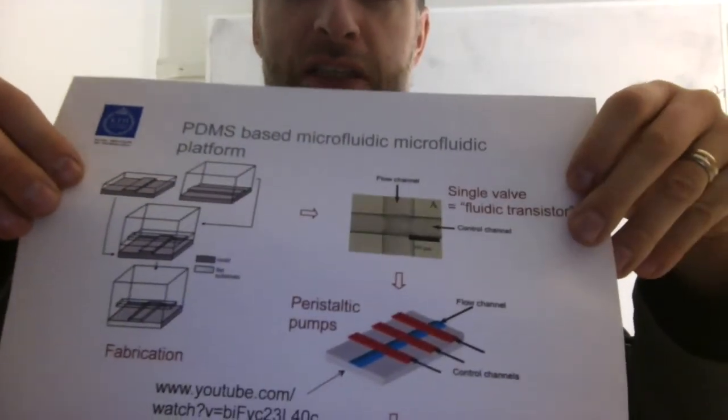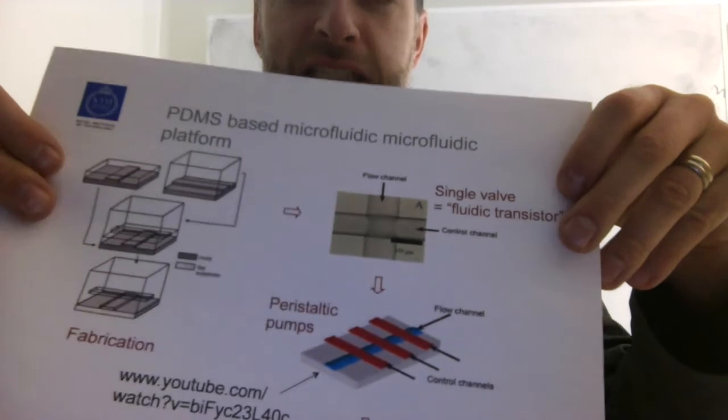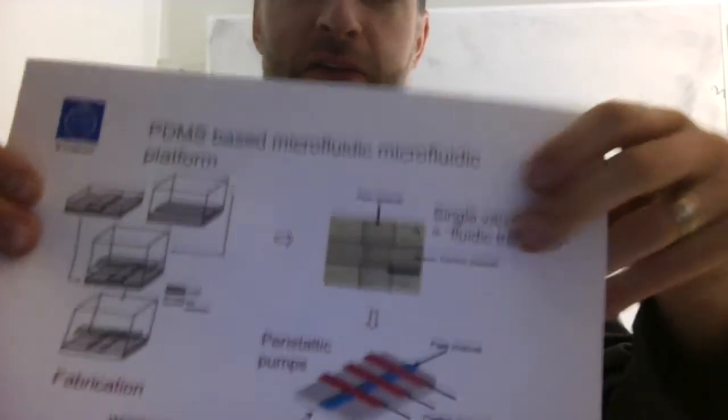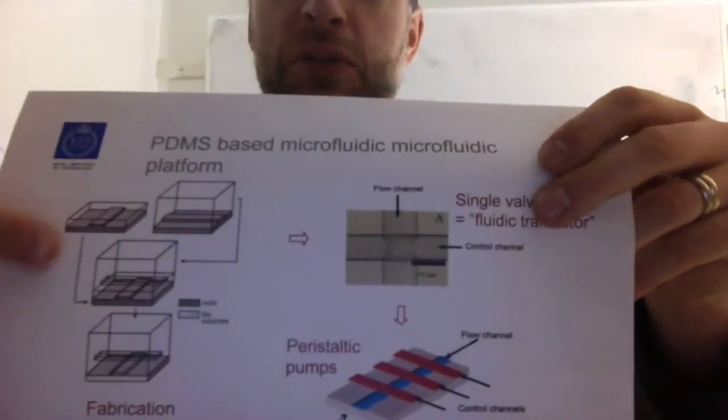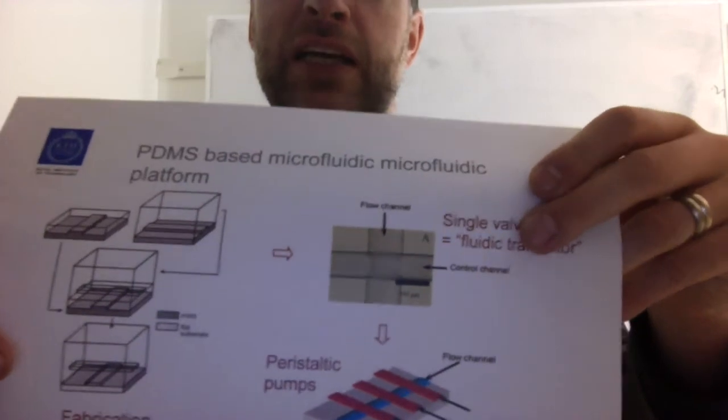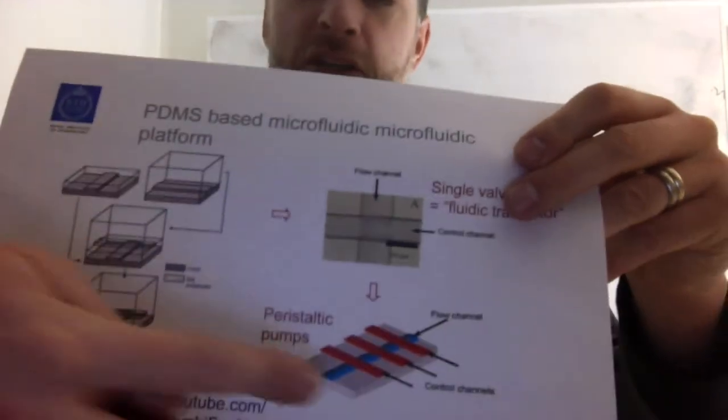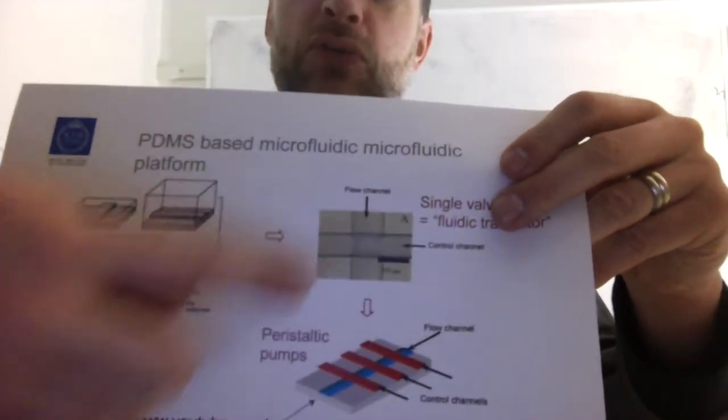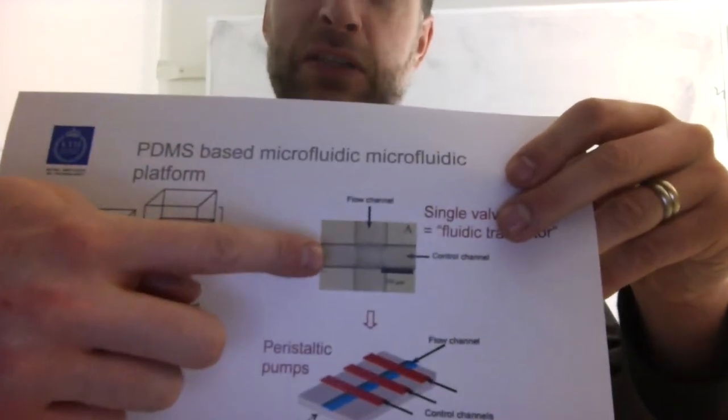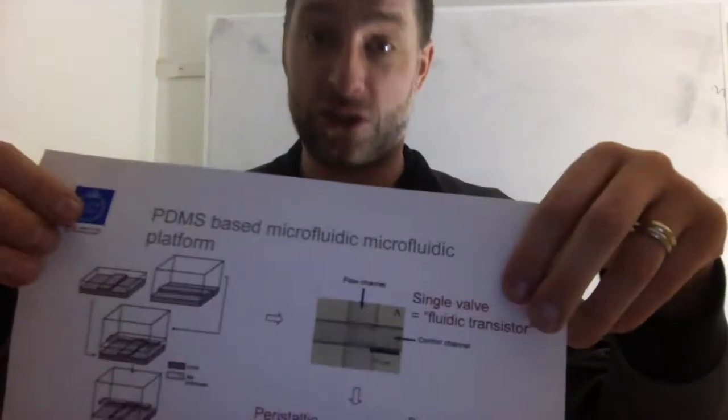Let's first start with the simplest structure that we can make, which is a channel. Once you put two channels on top of each other, you have a valve. Put three valves in series with each other, and you have a pump. Or you put two valves and connect them differently, because a valve is like a transistor, you can make an entire fluidic circuit.